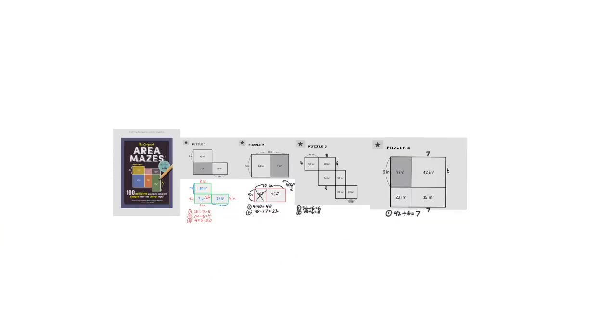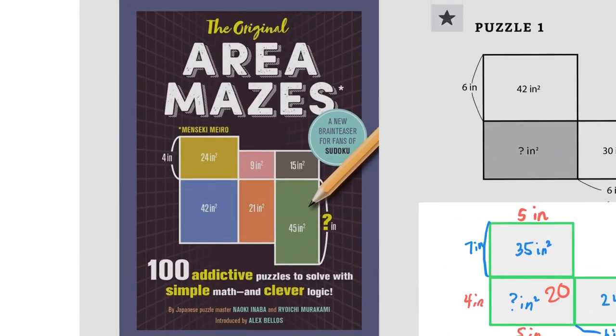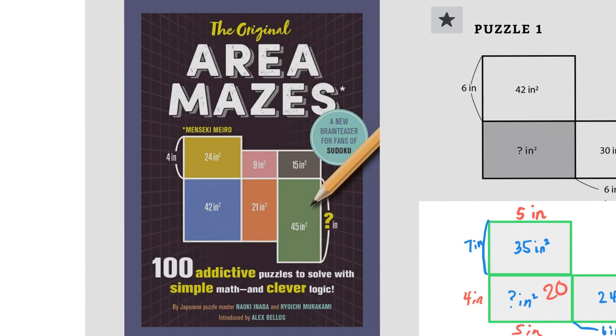So those are again some area mazes and I'm going to give these to my class to work on some, but I recommend if you want to try some of these you can get the book on Amazon.com on Kindle, it's just like three bucks. It's a really good way to challenge your thinking.